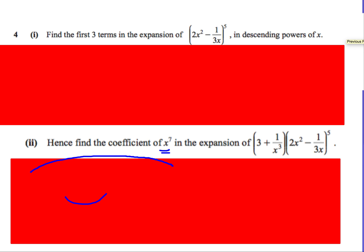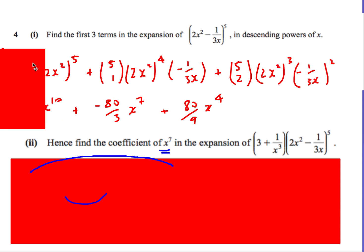Okay, one last question. Here we go. Very similar. So 2x squared minus 1 over 3x. First three terms. Descending. Read the question carefully. So this time, we're starting with the biggest power of x. 5 choose 0, 2x squared to the 5. This is my second term. This is my third term. Same idea as last time. 32x to the 10 minus 80 over 3x^7, 80 over 9x^4.